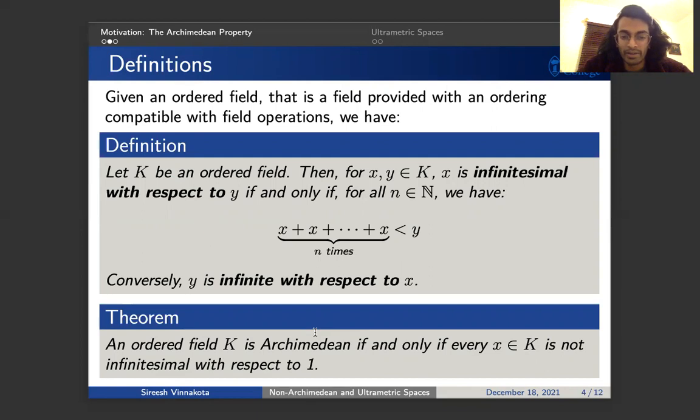So we're going to define, we're going to say that an ordered field k has the Archimedean property, if and only if every x in k is not infinitesimal with respect to 1. That means that you can add it a certain amount of times and get something that's beyond the unit 1. So this is, we can think about why this is equivalent later on, we're sort of just delving into what we mean by the Archimedean principle.